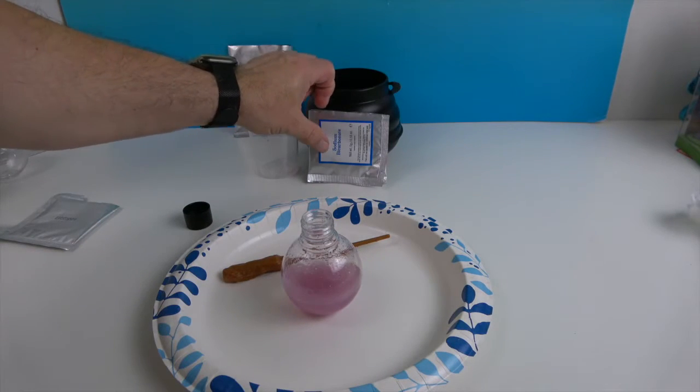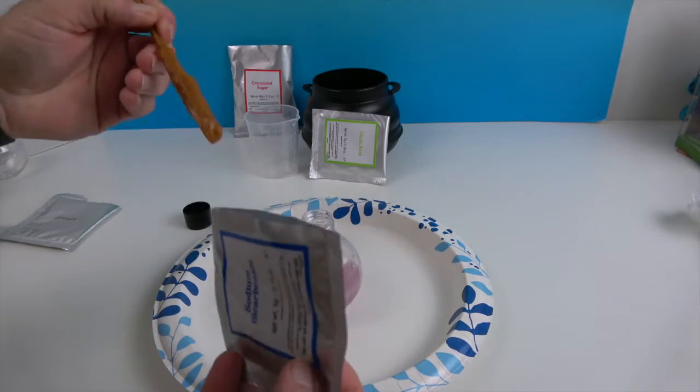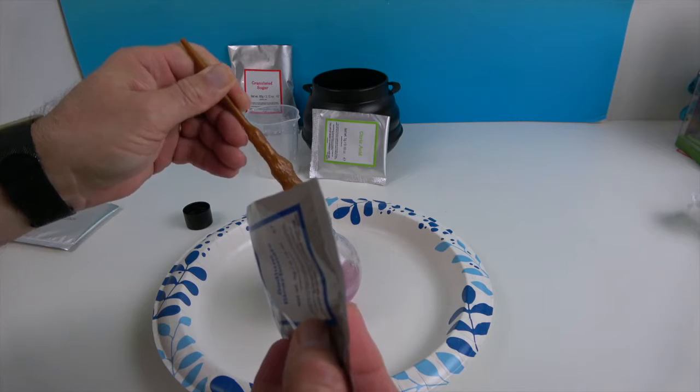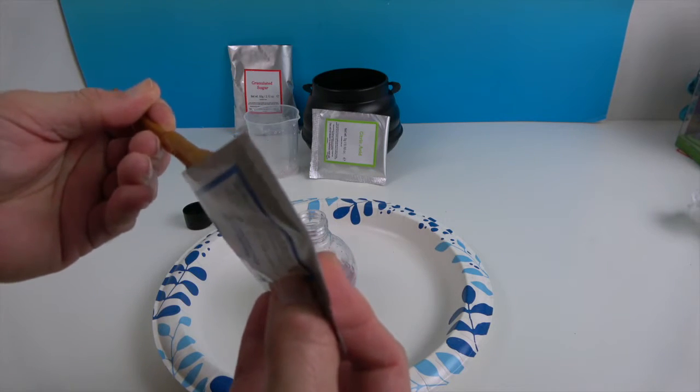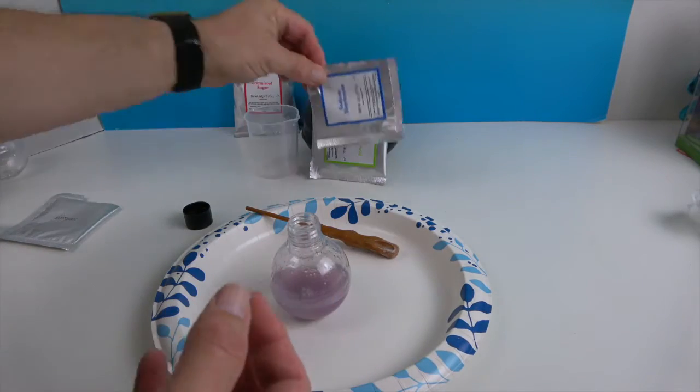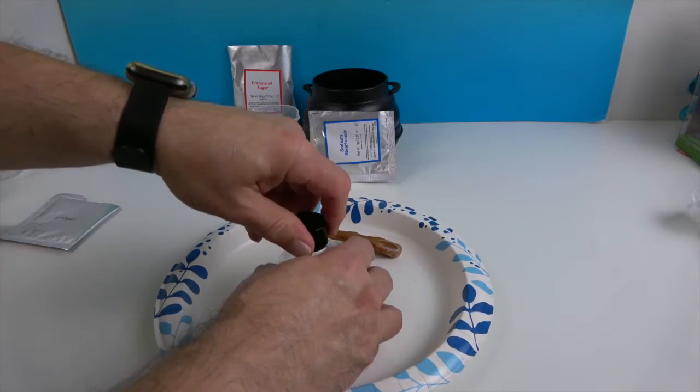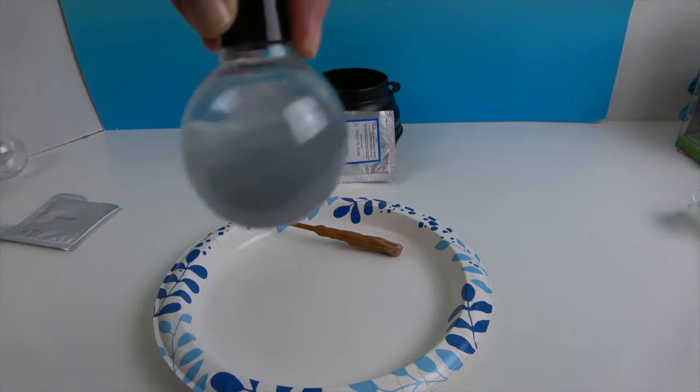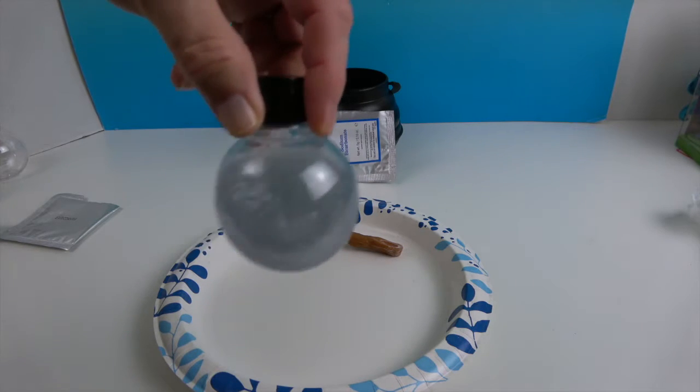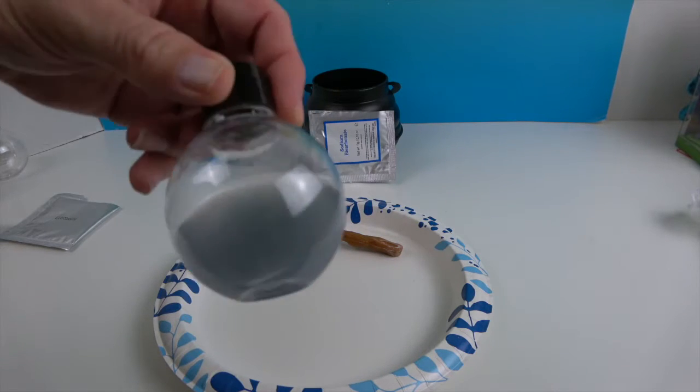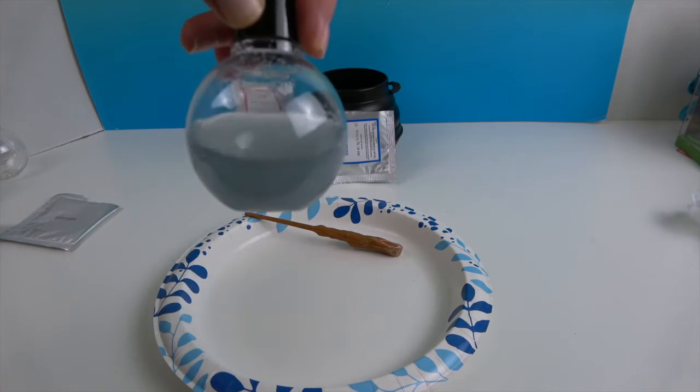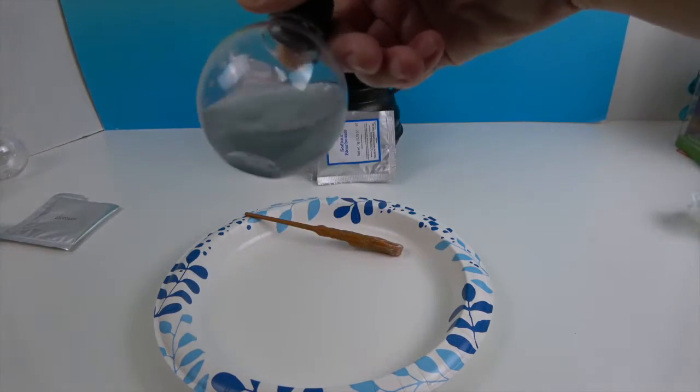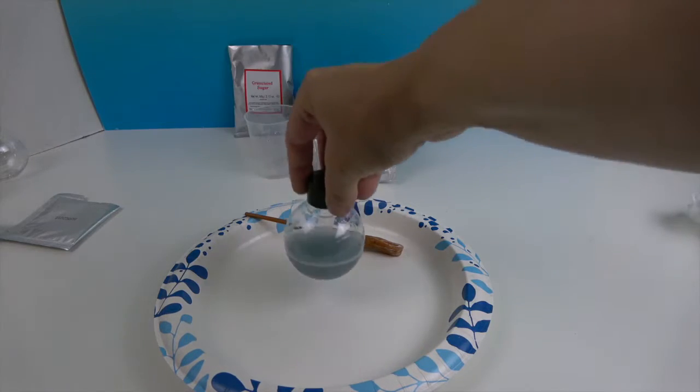Next step is add two spoonfuls of sodium bicarbonate and swirl. Two spoonfuls. One, two. And using the stick end. Swirl. Whoa, look at that! It went from pink to a bluish gray. Oh yeah, I think it's turning more blue as we speak. Look at that, very cool. I want to shake it up a little bit. It's definitely bluer. It started out pink. Now it's blue.